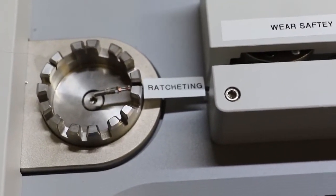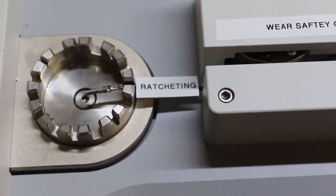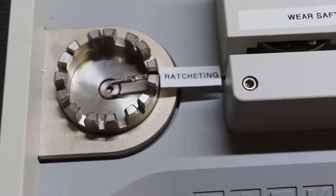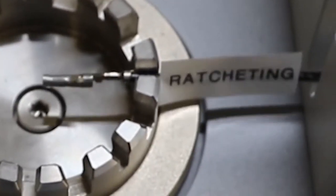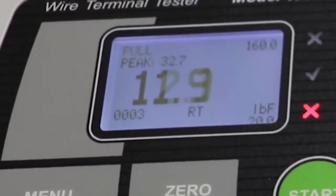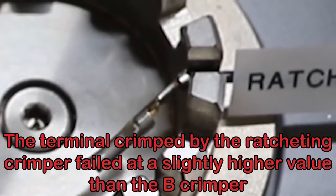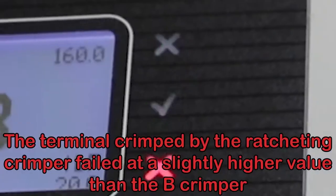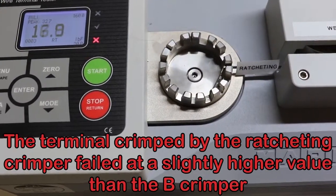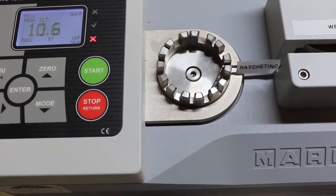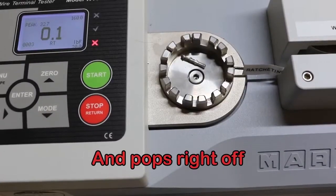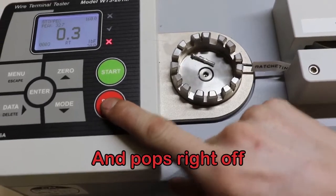Okay. So the next crimp we want to look at is the one that's done by the ratcheting crimper, which should give us a little bit better quality. So Nick, you want to go ahead and start the test, see what happens. All right. Very good.